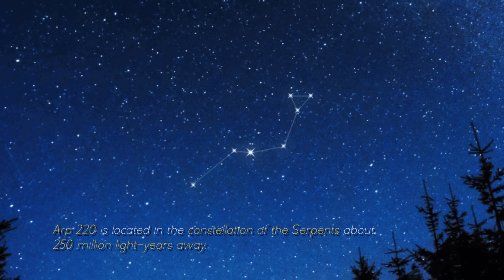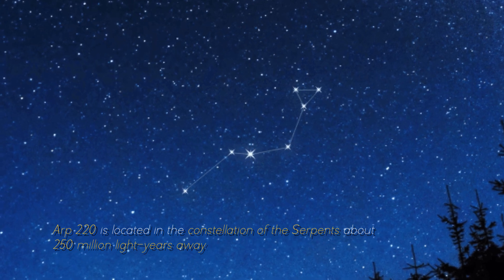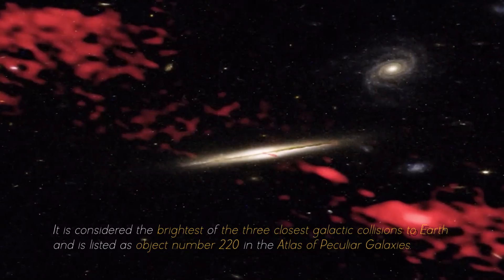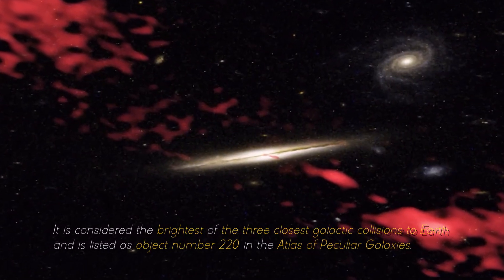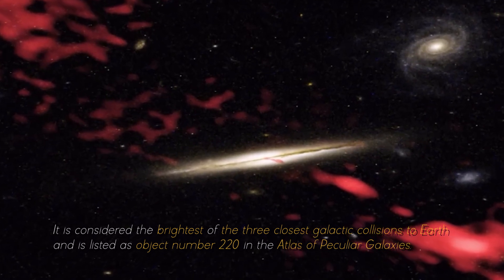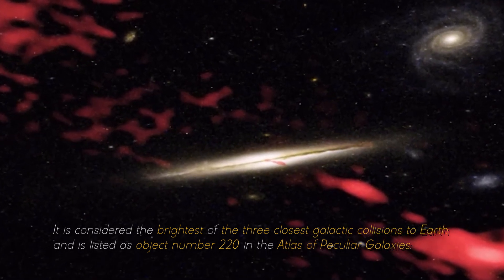ARP 220 is located in the constellation of the Serpents, about 250 million light years away. It is considered the brightest of the three closest galactic collisions to Earth, and is listed as object number 220 in the Atlas of Peculiar Galaxies.